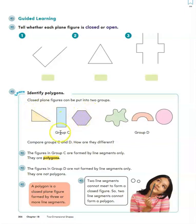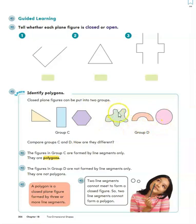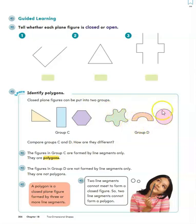All of these figures here in group C are polygons. The ones in group D — do you notice something different about them? Hopefully you noticed that they have curves, so they are not made up of straight line segments. These lines are moving all around in different directions. One is like a rainbow kind of shape, and then a circle is circular — it doesn't go in a straight line, it goes around in a circle. So these are not polygons.